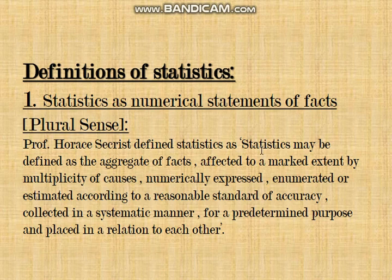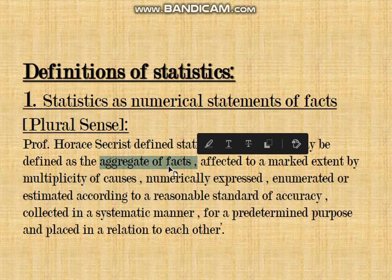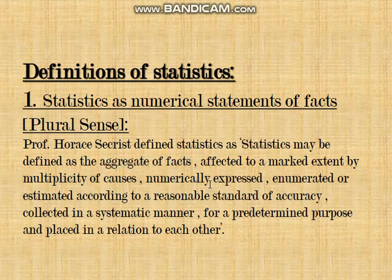The first point is 'aggregate of facts.' Statistics cannot be based on just one fact. For example, to analyze the academic performance of a classroom, you cannot randomly select one student, analyze his marks, and declare the class good or bad. In a classroom there are students of different types — high scoring, medium scoring, mediocre, and failing.